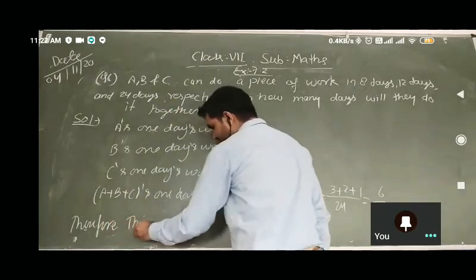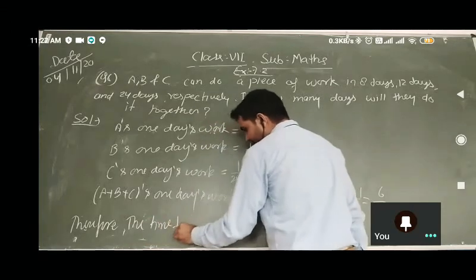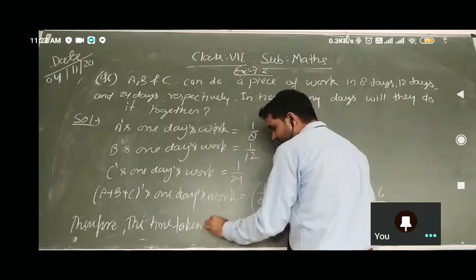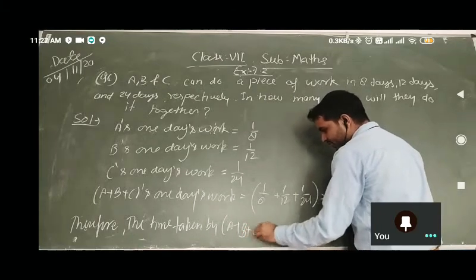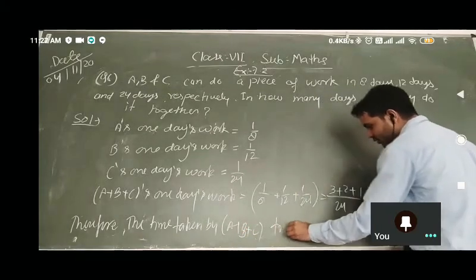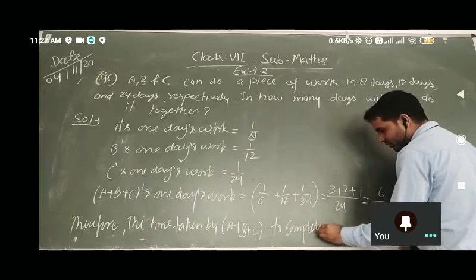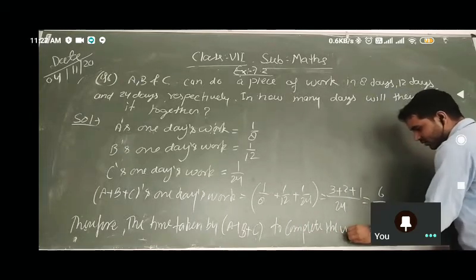The LCM is 24. So we calculate: 3 plus 2 plus 1 over 24, which equals 6 over 24. Therefore, the time taken by A plus B plus C to complete the work is 24 over 6.